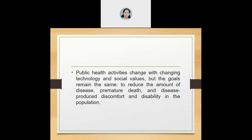The primary goal of public health is to reduce the amount of disease, reduce the rate of premature death, and mitigate the disease-produced discomfort and disability in the population. This goal remains the same although public health strategies or activities change in accordance with changing technology or the social values of a particular culture.